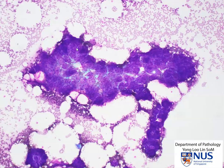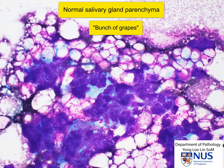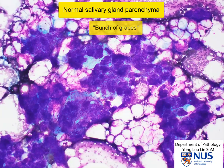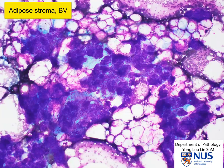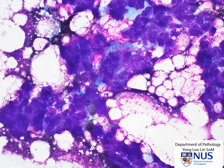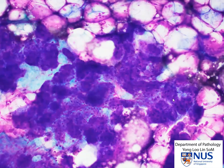We have here a cytology sample taken from normal salivary gland. At low magnification, we can see a very nice rigid repetitive pattern of these rounded acinar structures, almost like a bunch of grapes, which is very helpful in recognizing normal benign salivary gland parenchyma. Sometimes we can also see adipose stroma and blood vessels running through, and this vascular and adipose stroma are again helpful features in telling us we are dealing with normal or benign salivary gland parenchyma.